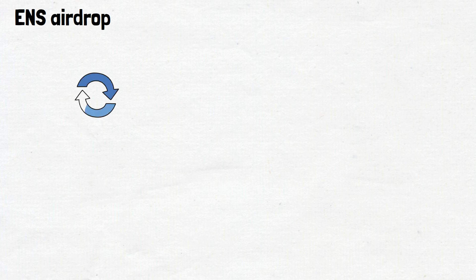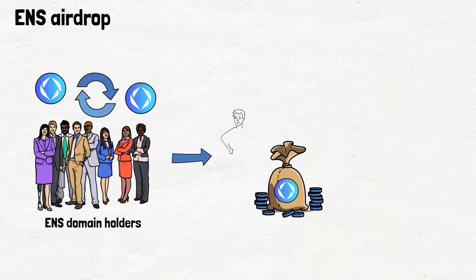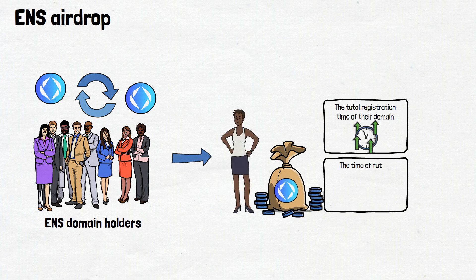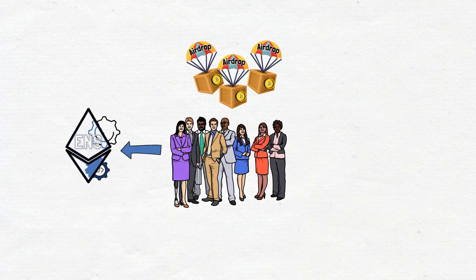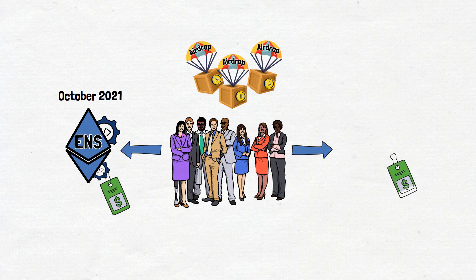Alright, what is an ENS airdrop? In simple terms, it's a process of ENS token distribution to domain holders. The amount of tokens each domain holder receives depends on the total registration time of their domain and the time of future registrations. It is worth noting that the more active domains users own, the higher token distribution they will receive. Airdrops are available to users who bought an ENS domain name before the end of October of 2021, or users who have purchased the domain name but haven't linked it to their wallets.